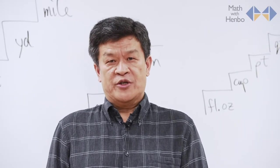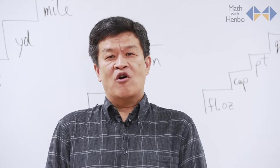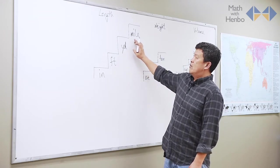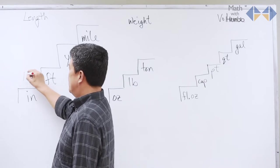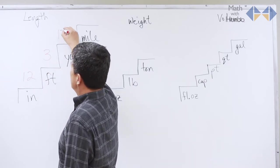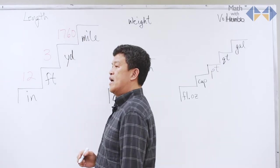When it comes to imperial measurement, it's a totally different ball game. So, in this case, I have inches, feet, yard, and mile. There are 12 inches to a foot, 3 feet to a yard, and 1,760 yards to a mile.